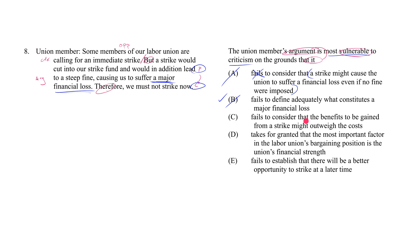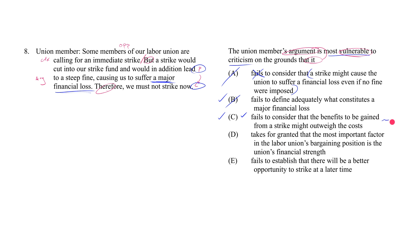C says the argument fails to consider that the benefits to be gained from a strike might outweigh the costs. You only talk about the costs — both premises are cost number one and cost number two, described together as a major financial cost. You didn't talk about the benefits. Definitely descriptively accurate, and potentially describing exactly where the flaw is. So I'm going to keep this one around.